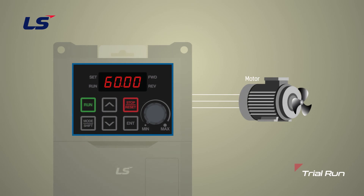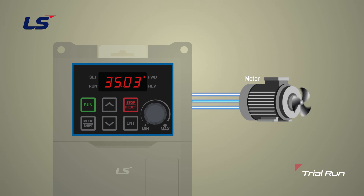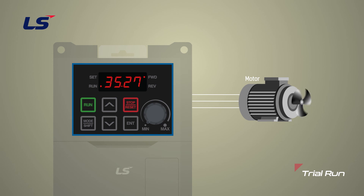Now, let's run the G100. If you press the run key, the forward and run LEDs will light up, and the seven segment window will display the output frequency in Hertz. If you don't change the acceleration mode, it will accelerate according to the acceleration time set by default. So you will reach the maximum frequency and the target frequency of 60 Hertz in just 10 seconds, which is the acceleration time set earlier. To stop, press the stop reset button. If the deceleration time is set to 10 seconds, it will stop in 10 seconds.